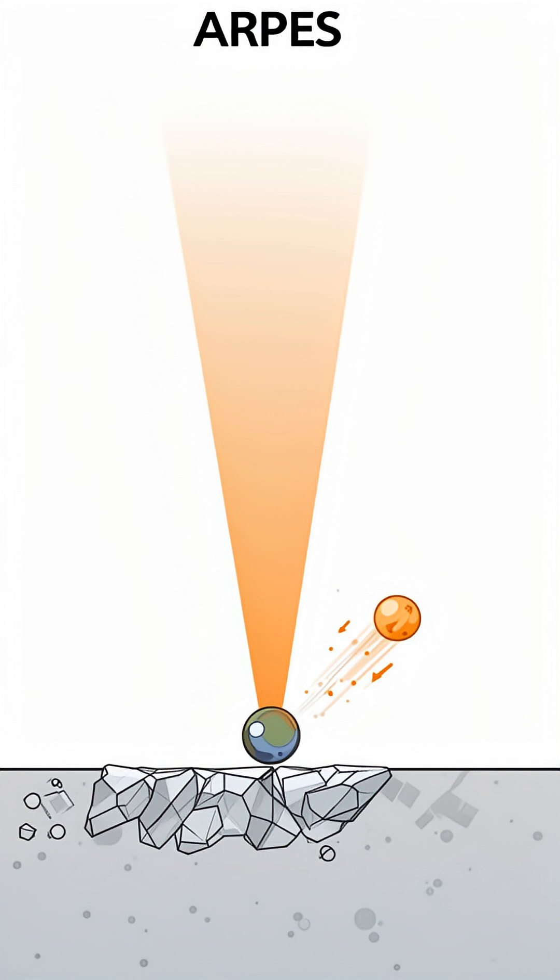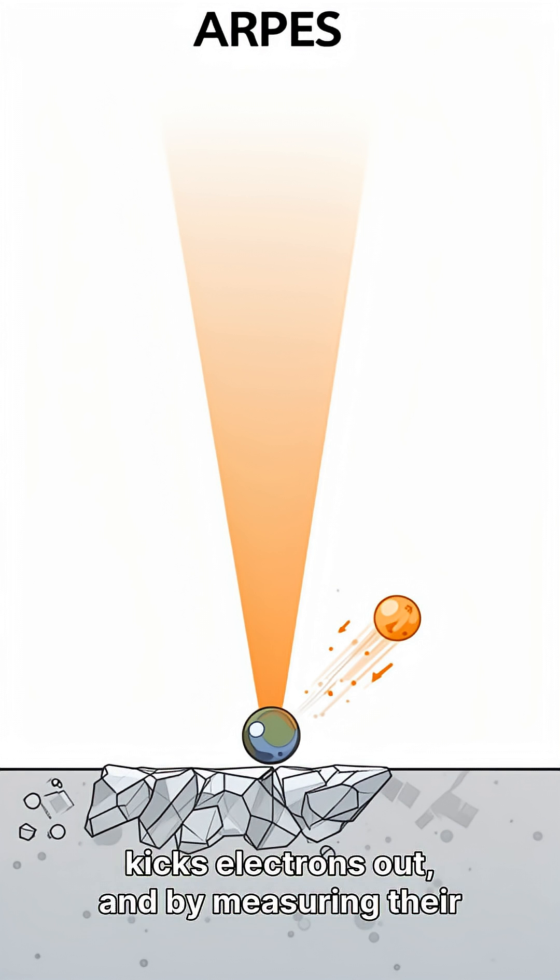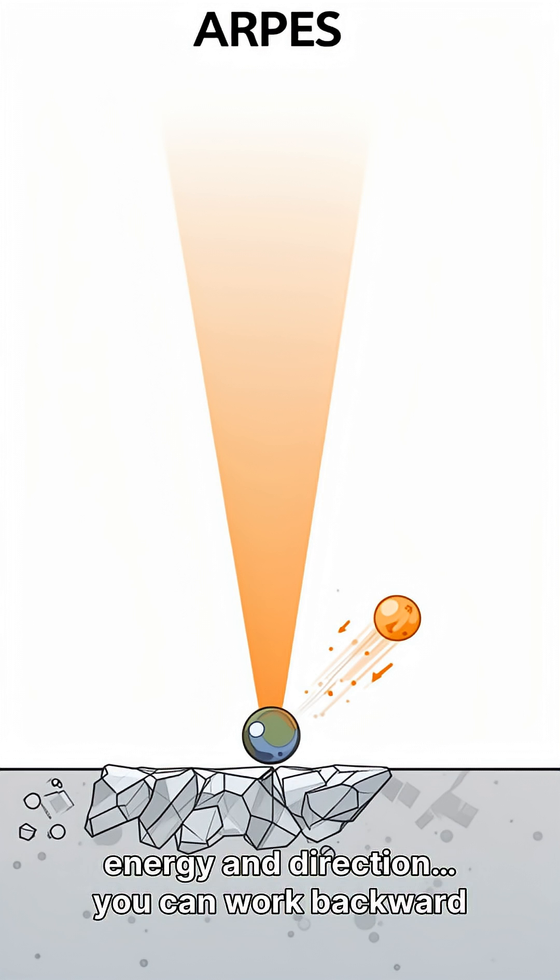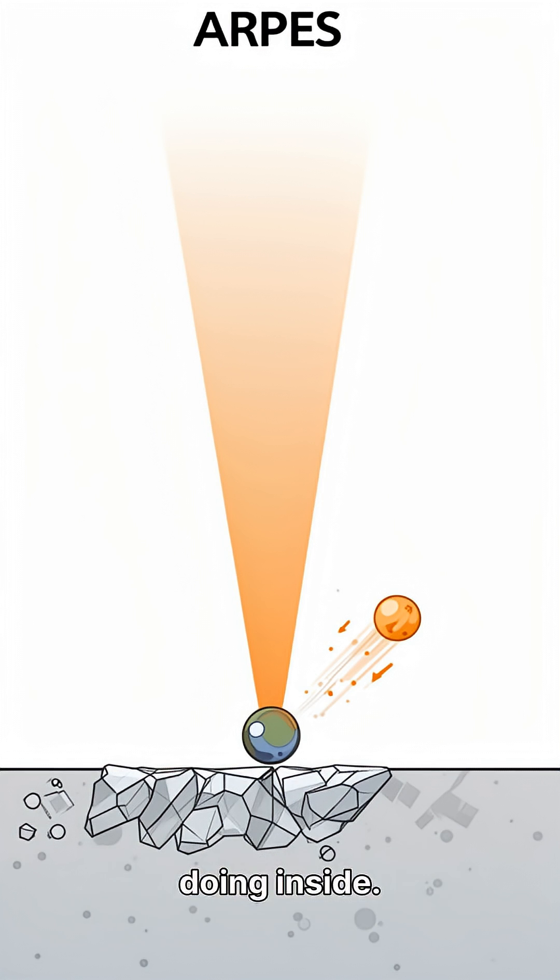And the tool they used is called ARPES. You shine light on a crystal, it kicks electrons out. And by measuring their energy and direction, you can work backward to figure out what the electrons were doing inside.